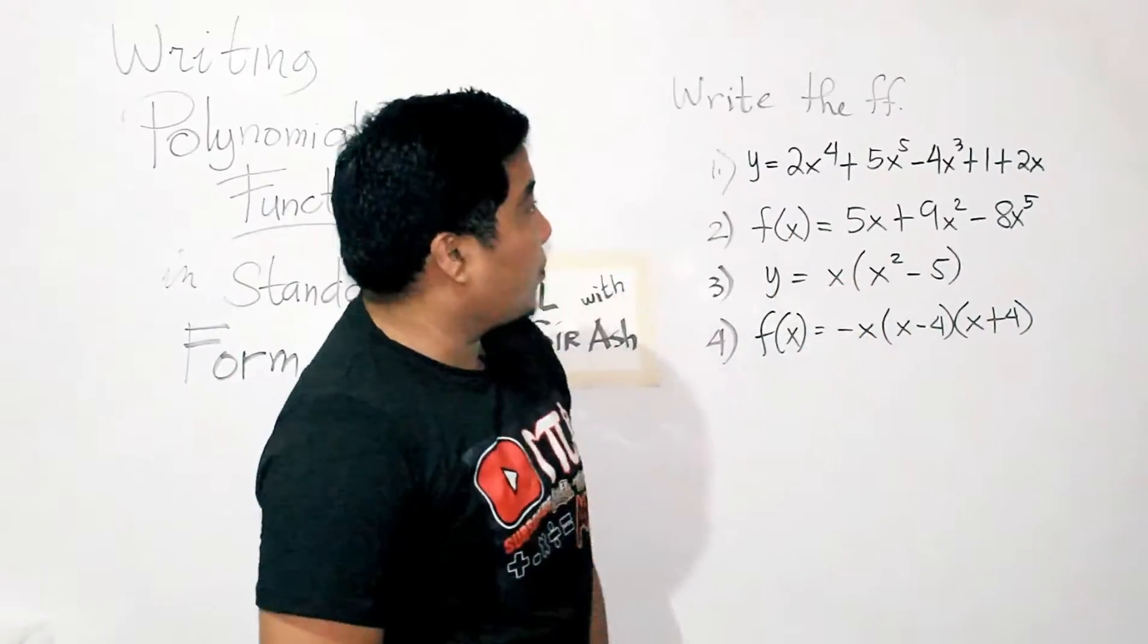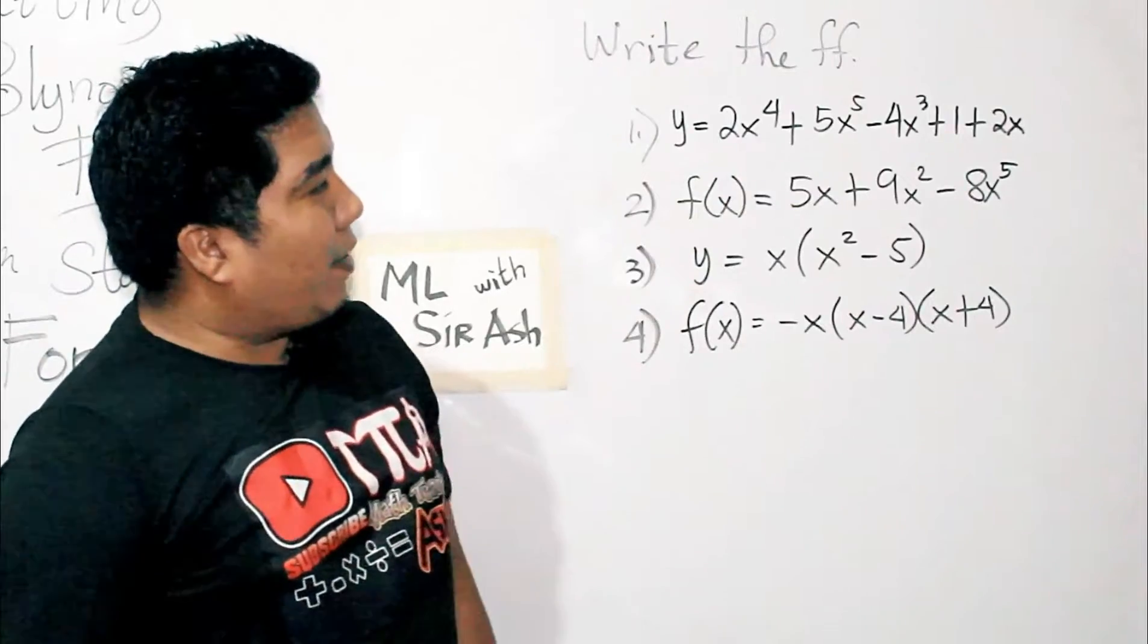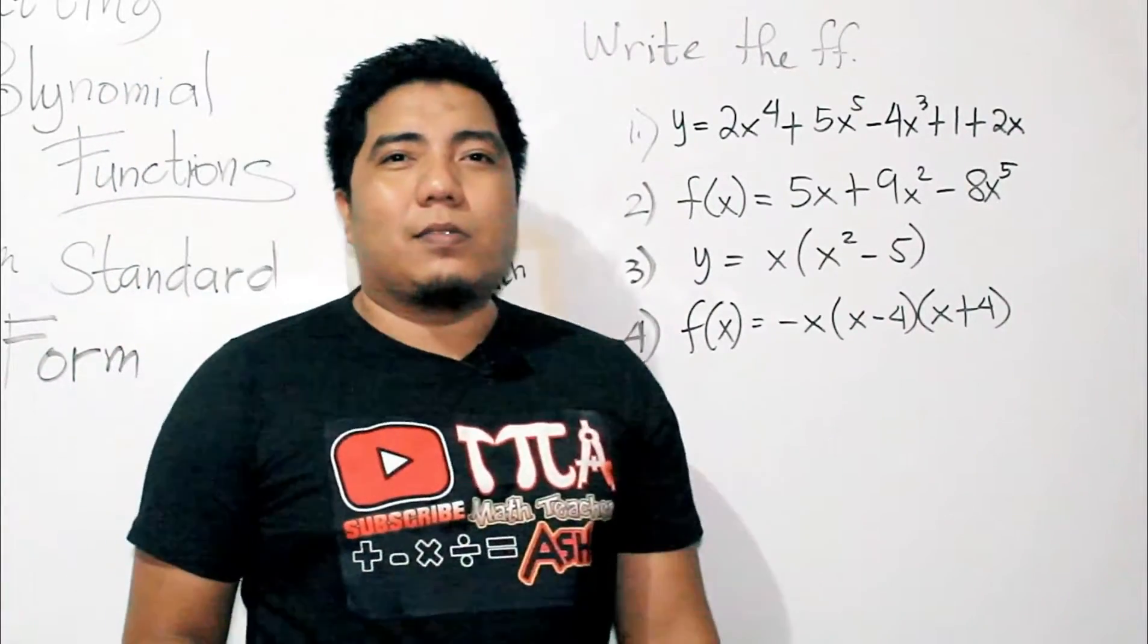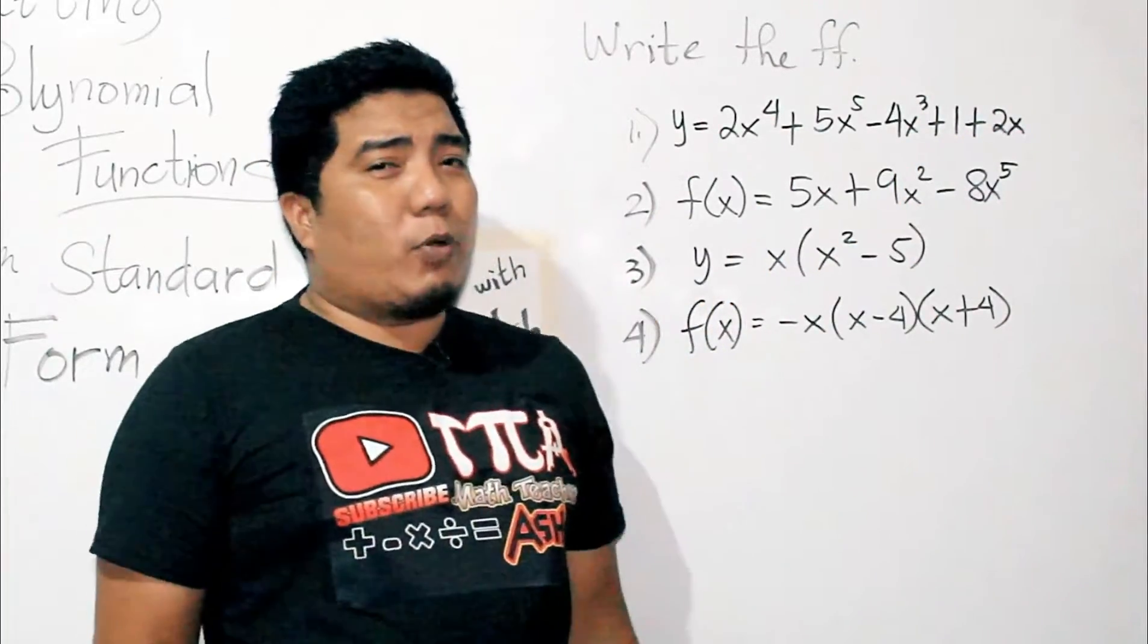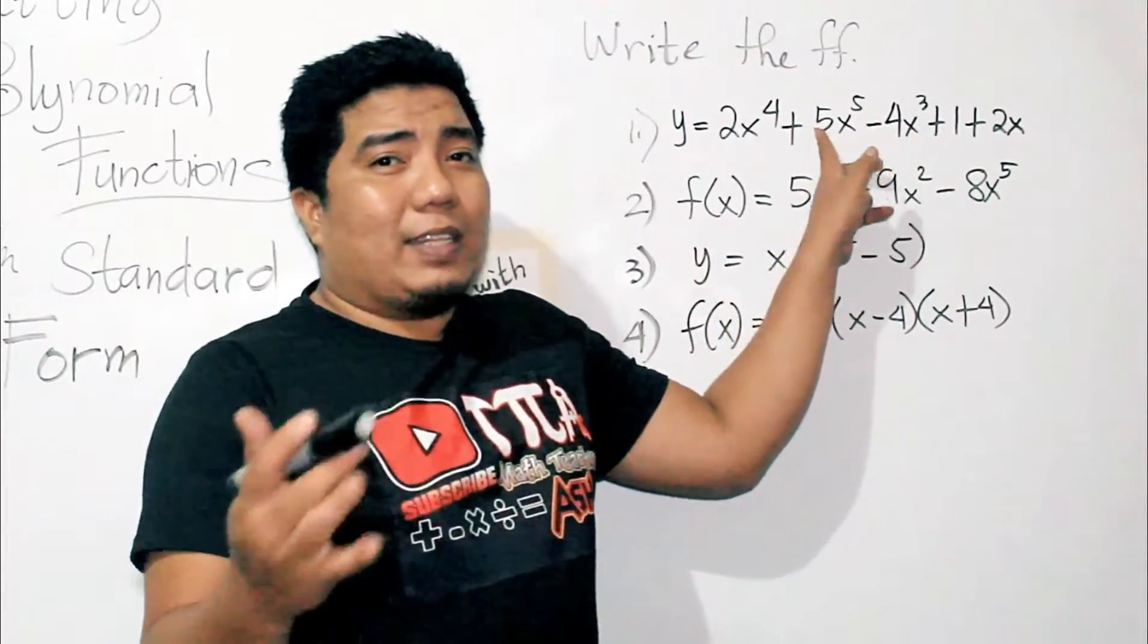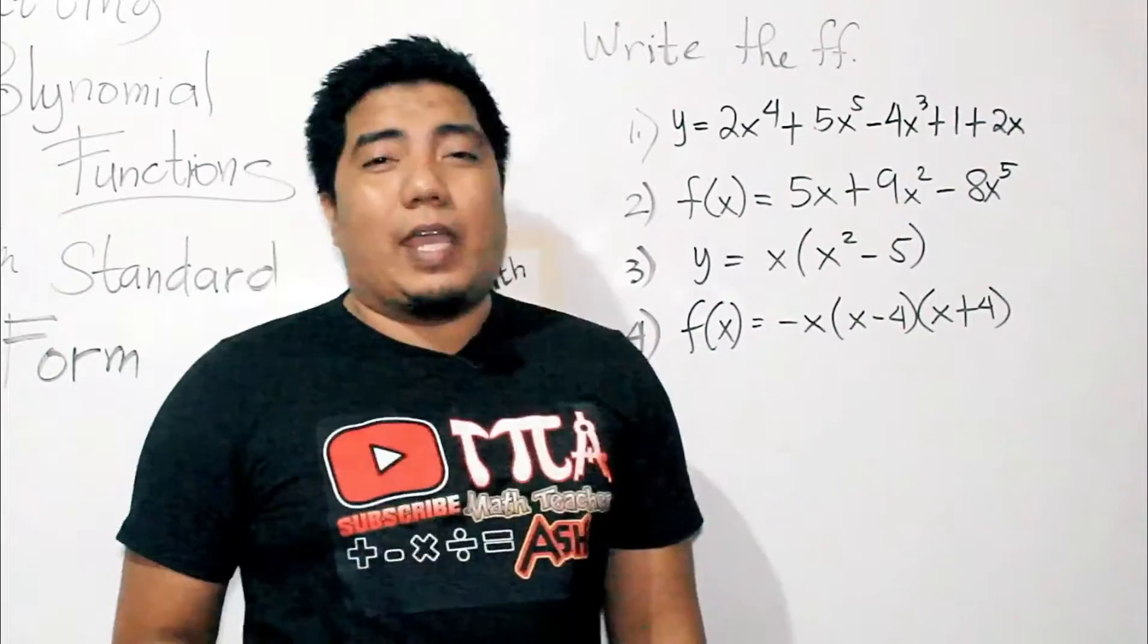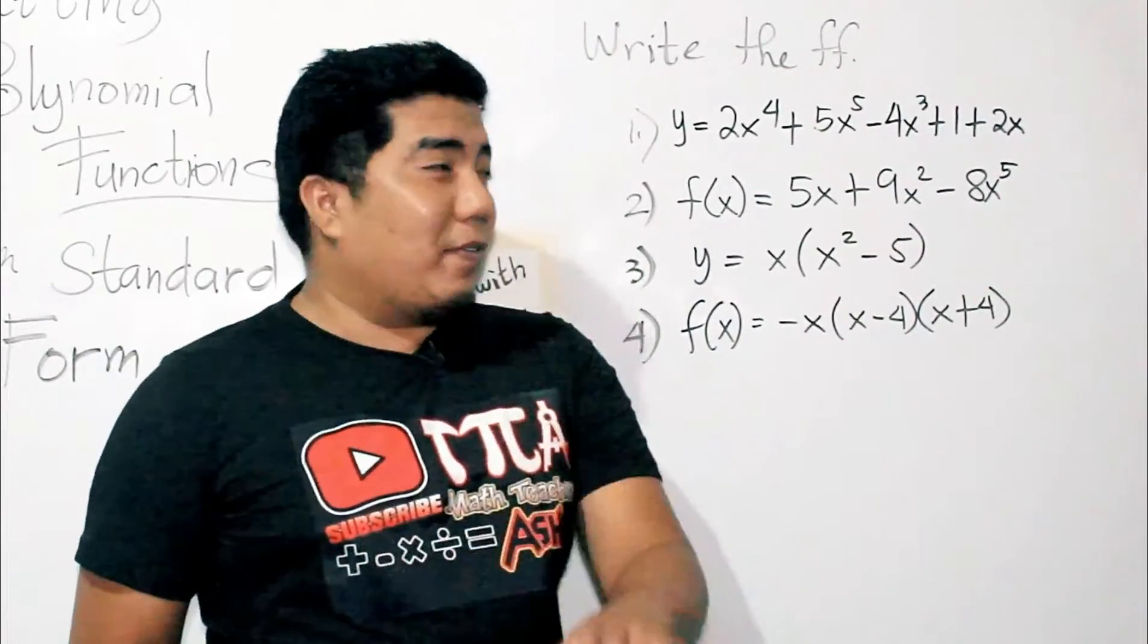So, let's try our examples here. The first one is y is equal to 2x to the 4th plus 5x to the 5th minus 4x cubed plus 1 plus 2x. Basically, this is not arranged from the highest degree or from the highest exponent. Why? Because the highest exponent here is 5. This function is a quintic polynomial function. And the quintic polynomial function has the degree of 5.